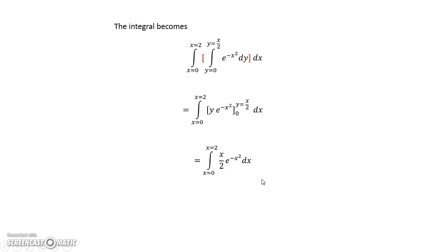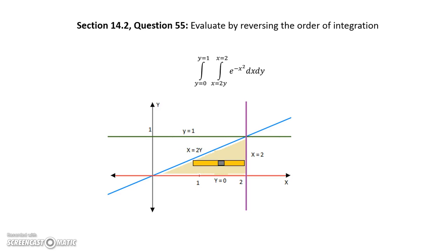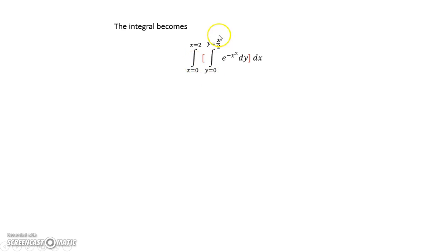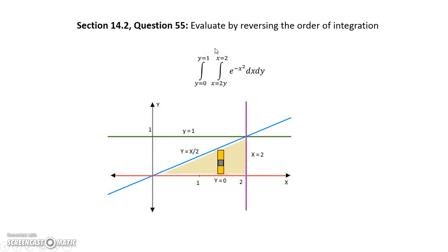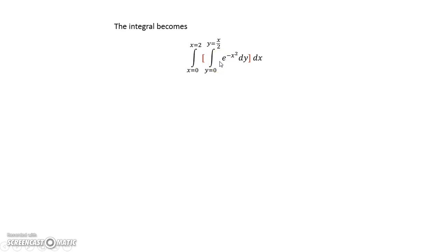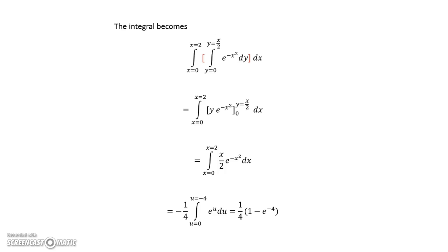The key idea here is to sketch your region first, identify the pattern of integration being used, and then change it to the other pattern. You cannot simply flip the limits directly — for example, you can't keep y from 0 to 1 and x from 2y to 2 and just reverse them. You have to draw the diagram, determine the new limits based on the geometry, and write the reversed integral correctly. This ensures you never have a variable in the outer integral that also appears in the inner integral's limits.